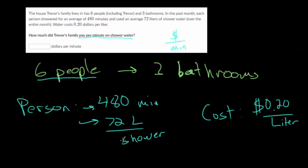Let's think about how much it's going to cost for one shower. I should be careful, I didn't write this out perfectly. This is not 72 liters per shower, this is 72 liters of shower water over the month. So in a month, each person will spend 480 minutes in the shower and they'll use up 72 liters of water.